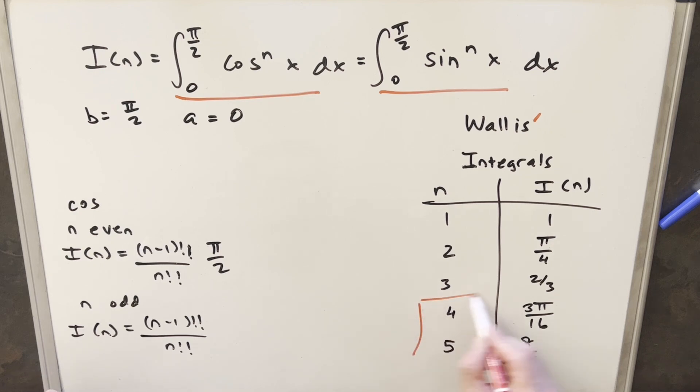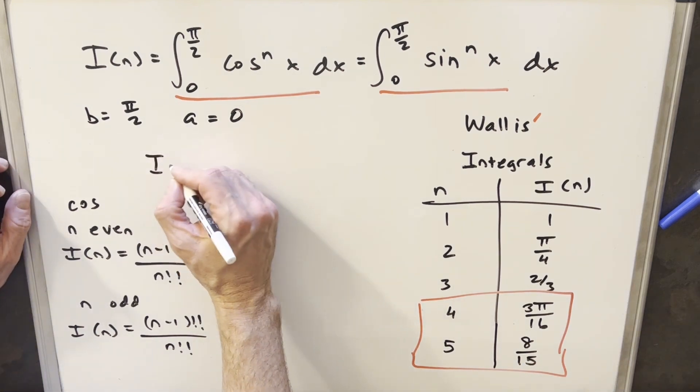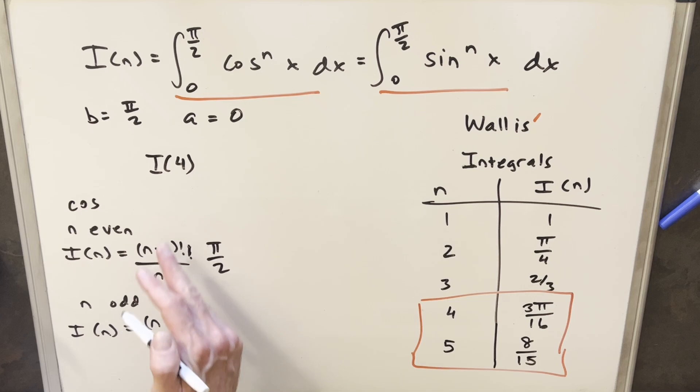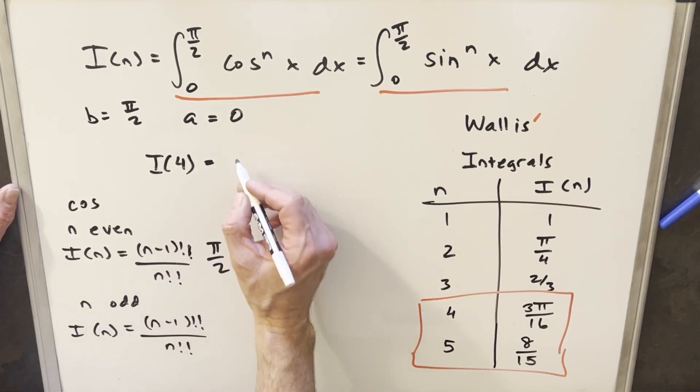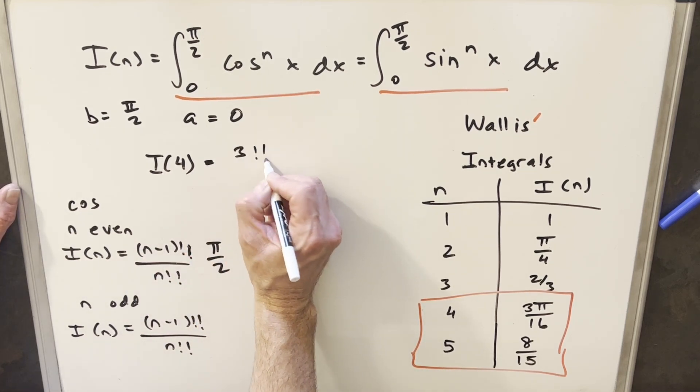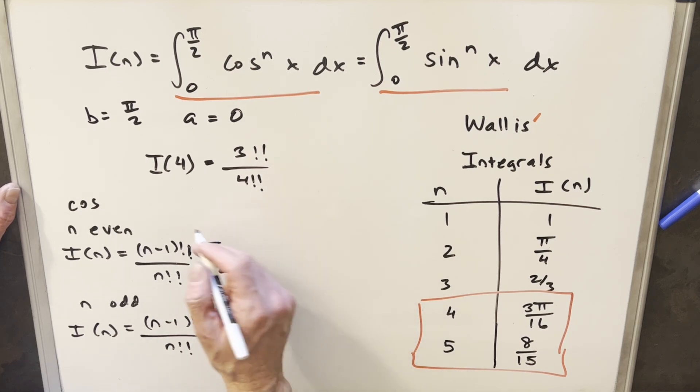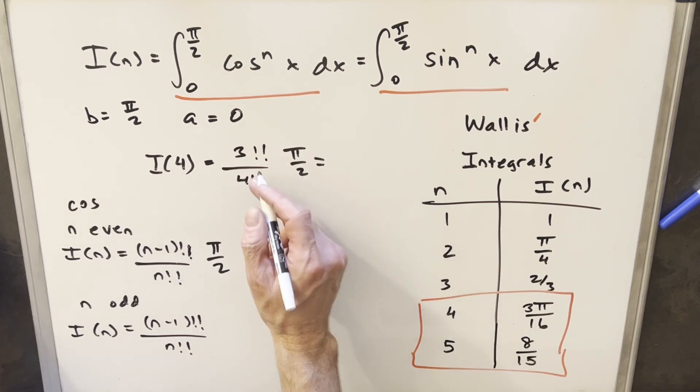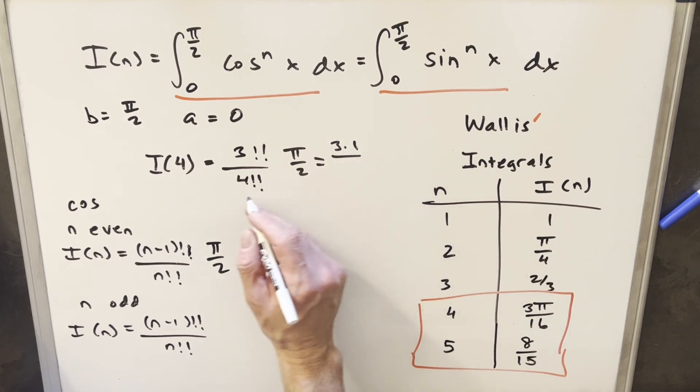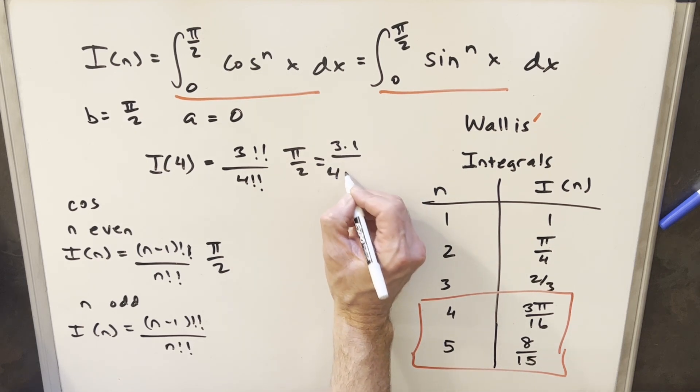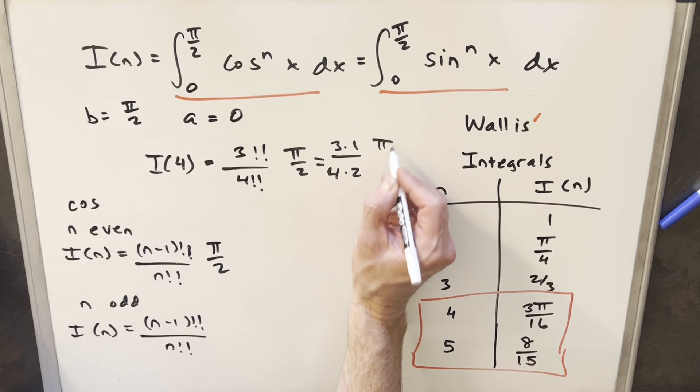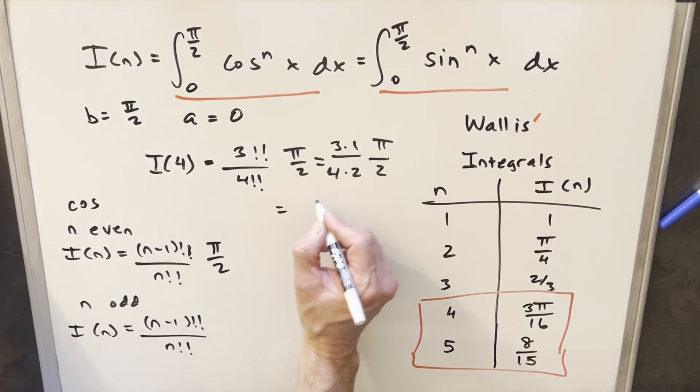Okay, so before we end this video, I think I'm just going to look at these last two values here for our I of 4 and I of 5. So let's just look at I of 4. So we're saying an integral where our exponent is going to be 4. We'll use this even case. So we're going to end up with 3 double factorial over 4 double factorial times π over 2. 3 double factorial is just going to be 3 times 1. 4 double factorial is going to be 4 times 2. We'll have our π over 2. Just multiplying this thing out, we're going to have 3π. Multiplying out the denominator, that's going to give us 16. That's going to be that value right there.